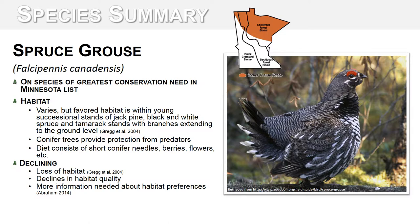Spruce grouse is a bird that lives in boreal forests in Minnesota, including dry jack pine forests in north central Minnesota. This bird was listed on Minnesota's species of greatest conservation need, but this species is not well monitored and more information is needed about its status. Its habitat varies, but the bird seems to favor young jack pine, black and white spruce, and tamarack stands. It is believed that the bird prefers trees with intact lower branches to provide protection against predators, similar to the Kirtland's warbler. Its diet consists mostly of short conifer needles, berries, and flowers. Its population faces threats due to climate change and changing forest management practices. Currently, the Minnesota DNR is conducting distribution and population surveys and looking for more precise information to manage forests to improve their habitat.